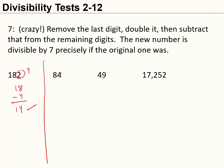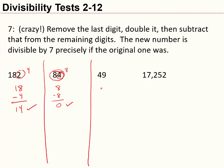How about 84? I take off the 4, double it to get 8, and then 8 minus 8 equals 0. Is 0 a multiple of 7? Yes — 0 is 7 times 0. So 84 is divisible by 7. How about 49? You may recognize it as 7 squared. Applying the trick: 9 doubled is 18, so 4 minus 18 equals negative 14. Taking the positive version, 14 is divisible by 7, so yes, 49 is divisible by 7.